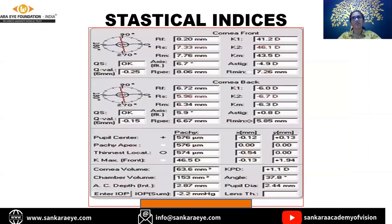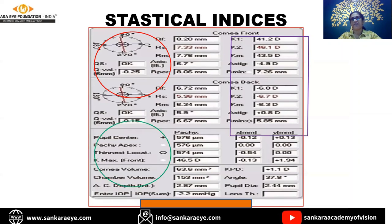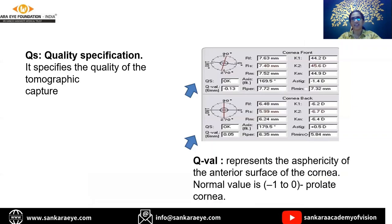Statistical indices we classify into three groups: quality specification and Q value; keratometric values; and pachymetric indices. QS is quality specification - whenever you are reading a map, this should show 'OK'. Anything showing data error, or displaying yellow or red color, indicates that the data shown is not actually what is in the patient's eye - it is an extrapolation the computer has done, and you need to repeat the topography.